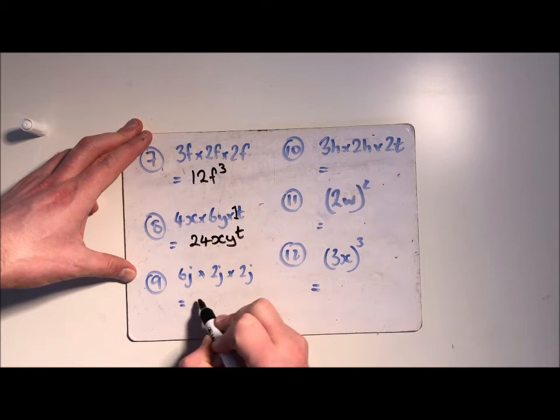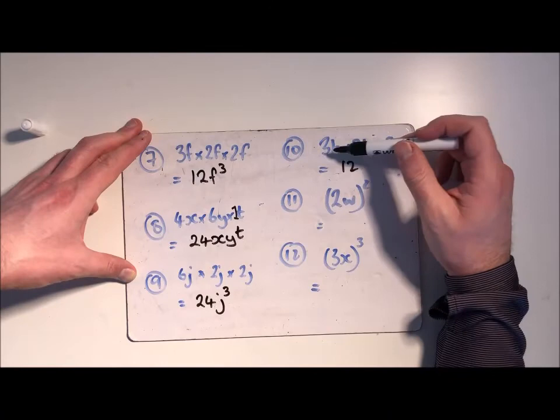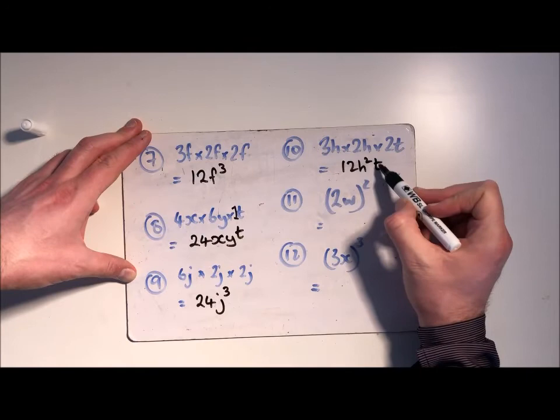6 twos are 12 and 12 times 2 is 24. j multiplied by j multiplied by j is j cubed. 3 twos are 6 times another 2 is 12. That one looks very similar to that one but we've got different letters. Now h multiplied by h is h squared, and you can't do anything with the t so you just need to write it beside it. Make sure the squared goes with the h because the squared doesn't go with the t, it goes with the h.